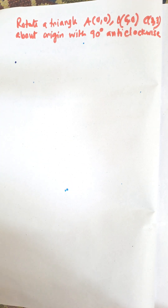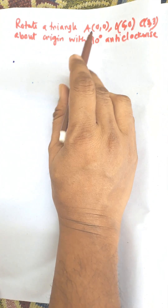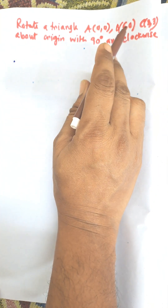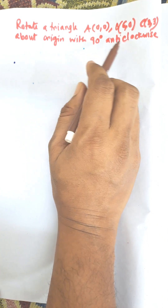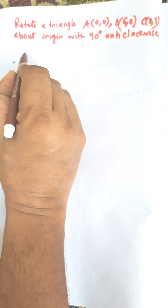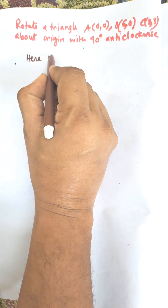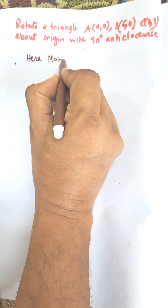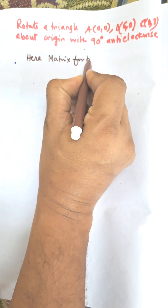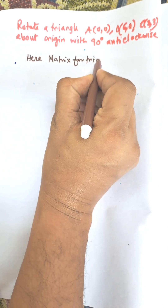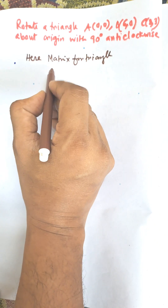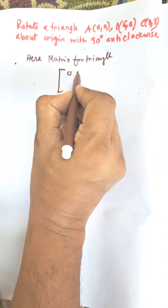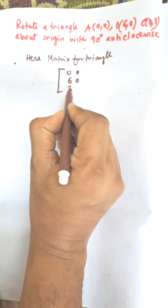Hi everybody. In this video I am going to solve the following problem: rotate the triangle A(0,0), B(6,0), C(3,3) above origin with 90 degree anti-clockwise. The matrix for the triangle is equal to 0 0 6 0 and 3 3.